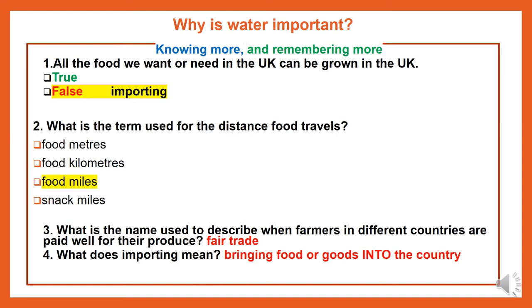Question 1: All the food we want or need in the UK can be grown in the UK. The answer is false, and the clue there is importing. We learnt last term about the importance of importing food from different countries. Question 2: What is the term used for the distance food travels? The answer is food miles.